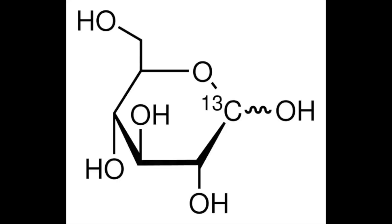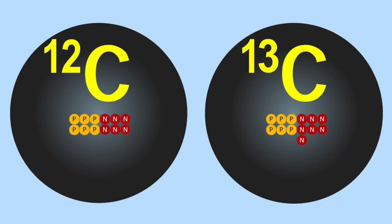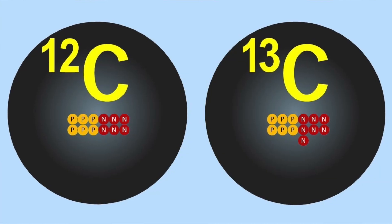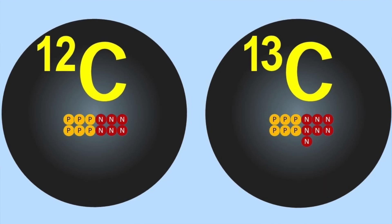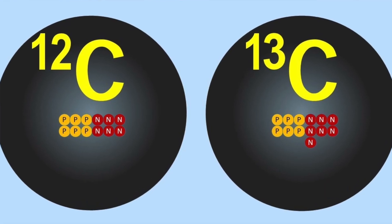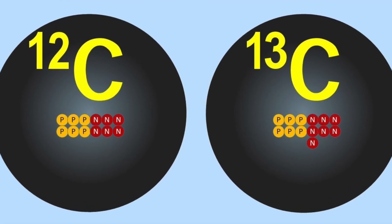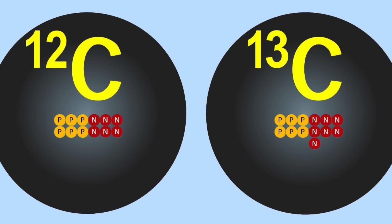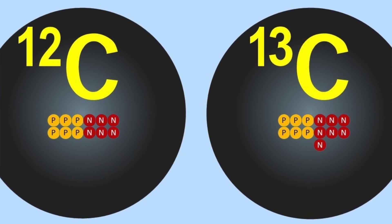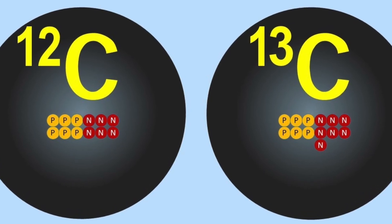The most common isotope of carbon is C12, which has six protons and six neutrons in its nucleus. Carbon-13 is slightly heavier because it has six protons and seven neutrons in its nucleus.